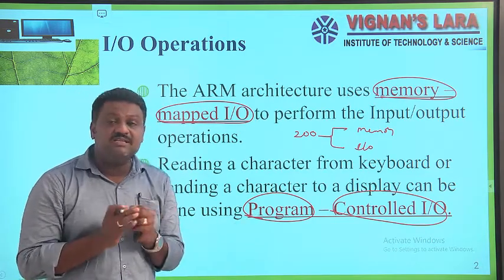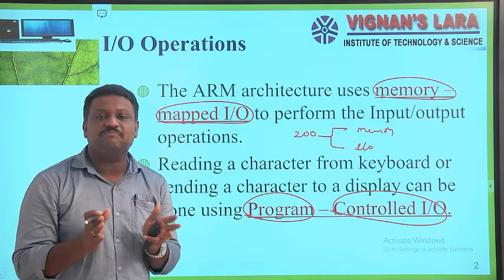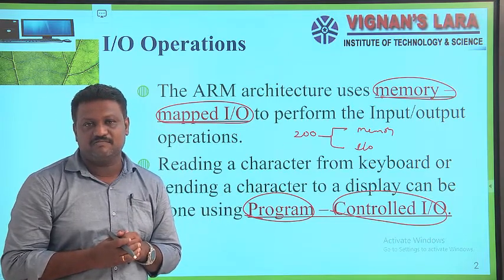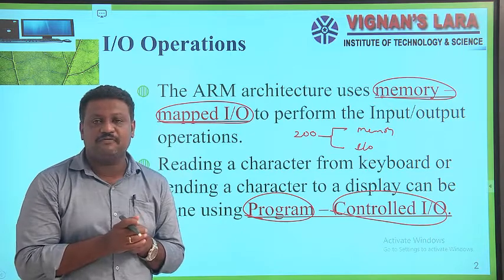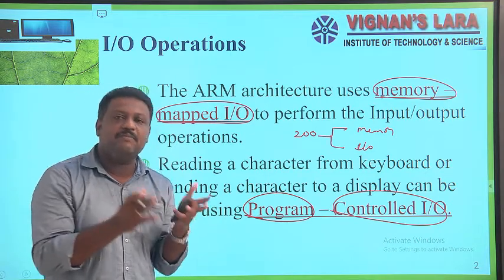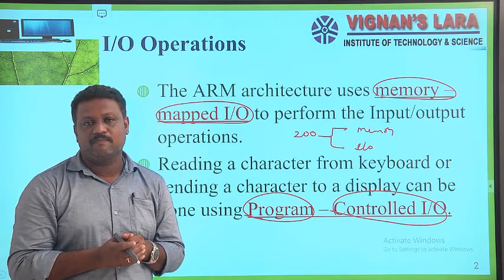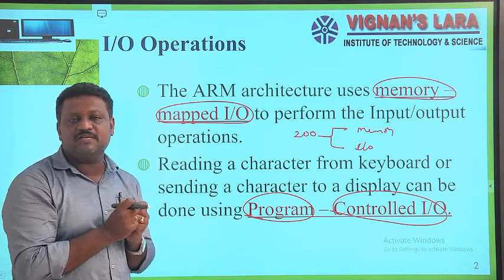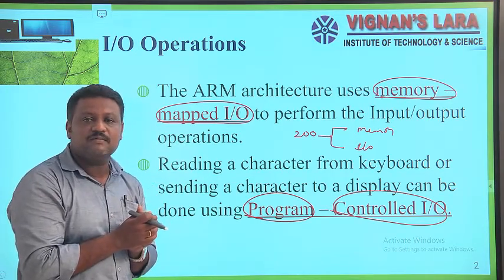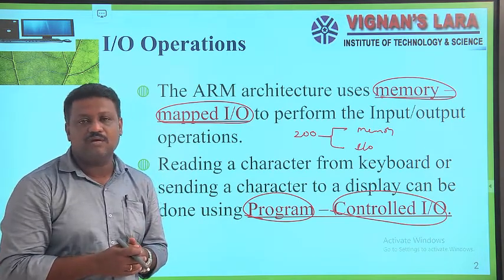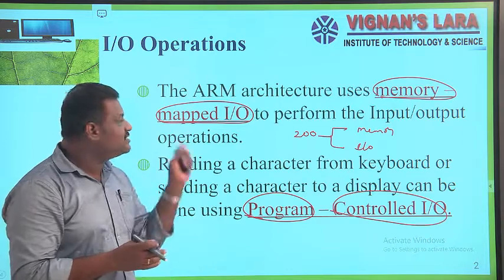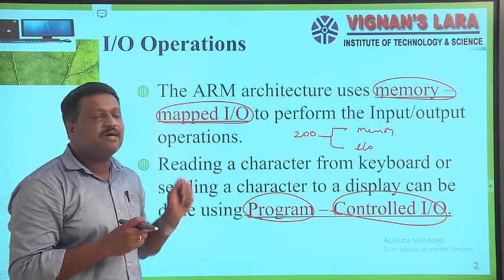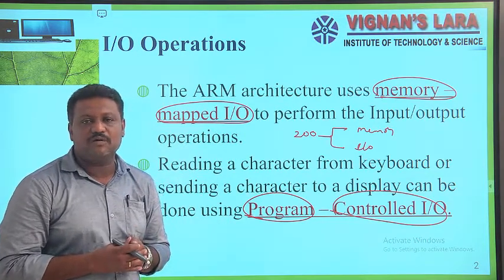The problem with programmed-controlled I/O is that the processor is unnecessarily kept busy reading data from an input device and sending data to an output device, using a read program and a write program respectively. In ARM processors, reading a character from an input device or sending a character to an output device is done using programmed-controlled I/O. The two key concepts in this slide are memory-mapped I/O and programmed-controlled I/O.